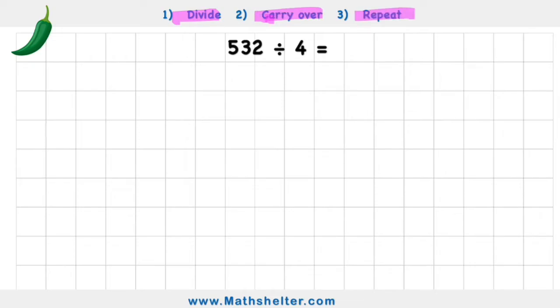So if we're looking at this first example, 532 divided by 4, what method can we use to help us? Well, we're going to use the bus stop method. We call it the bus stop because the big number, 532, sits inside the bus stop and our small number sits outside.